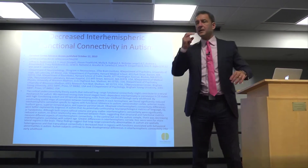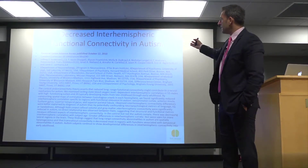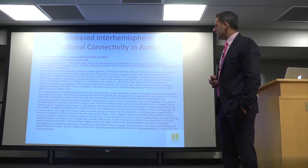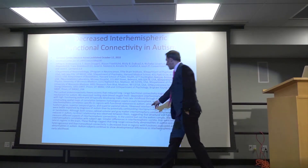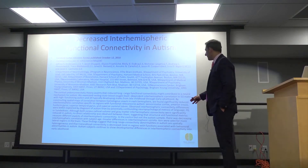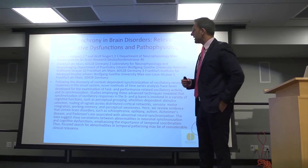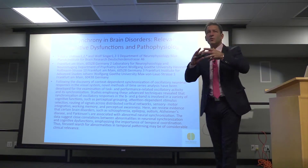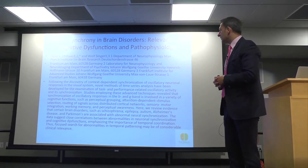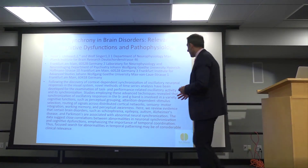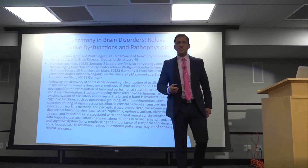This is another study looking at the idea of decreased functional connectivity in autism, where the corpus callosum and inter-hemispheric connectivity were significantly reduced. This is another study looking at neural synchrony — synchronization in the brain — and how that relates to certain disorders like autism, Alzheimer's, schizophrenia, and other similar disorders.